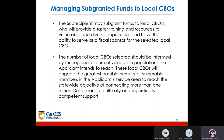The subrecipient may subgrant funds to local CBOs who will provide disaster training and resources to vulnerable and diverse populations and have the ability to serve as a fiscal sponsor for the selected local CBOs. The number of local CBOs selected should be informed by the regional picture of vulnerable populations the applicant intends to reach. These local CBOs will engage the greatest possible number of vulnerable members to reach the statewide objective of connecting more than one million Californians to culturally and linguistically competent support.